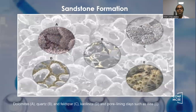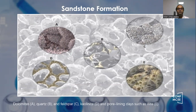The sandstone formation is very important because most of the oil is present inside rock samples which are sandstone. It consists of different particles like dolomite, quartz, sulfite, illite, etc.